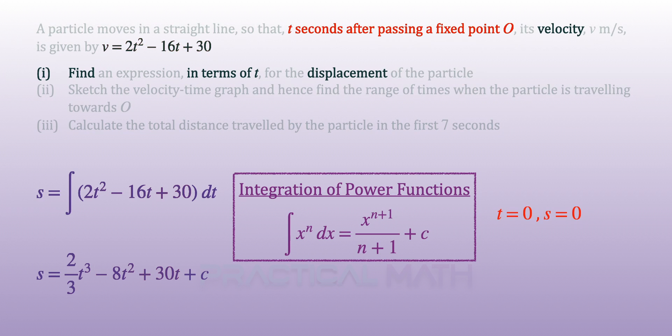From the question, t seconds after passing fixed point O implies that when t equals 0, displacement s will be equal to 0. Replacing both t and s to be 0, we are able to solve for c which is also 0. And here we have the displacement equation.